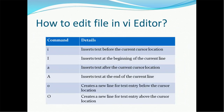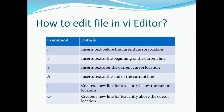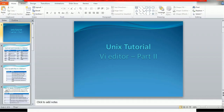How to edit a file in VI Editor. We saw how to edit using the I command in the last session, but there are other commands available. The small 'i' inserts text before the current cursor location. Capital 'I' inserts text at the beginning of the current line. Small 'a' inserts text after the current cursor location. Capital 'A' inserts text at the end of the current line. Small 'o' creates a new line for text entry before the cursor, and capital 'O' creates a new line after the cursor location.